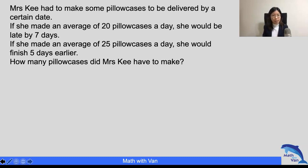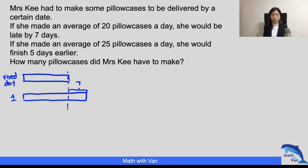So remember that she was given a fixed date. Let's draw this part here to represent the fixed date, the certain date that she was given, the fixed day. And we know that in scenario one, she will be late by seven days. So we have to represent that longer, and we specify it as seven here. So this is what we call scenario one.